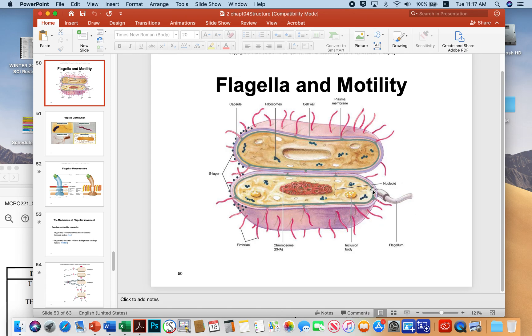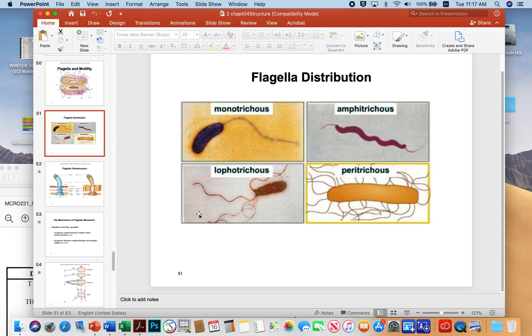In this particular example, you can see the single polar flagellum. Here's a diagram showing you some different types of distributions. Here's a polar monotrichous flagellum, a single hair essentially.